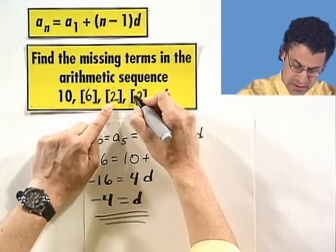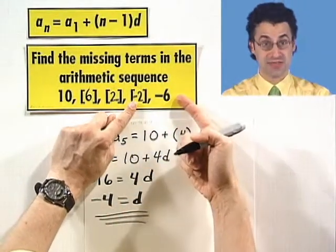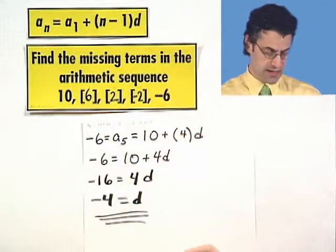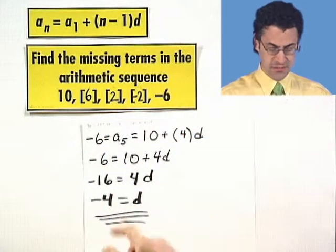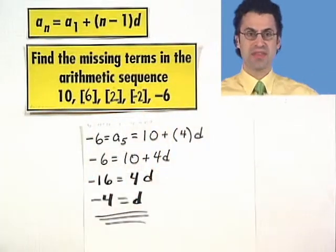And just as a check, let's do one more. If I take negative 2 and add negative 4, notice I get negative 6. So I actually hit the target that we were given. And so we were actually able to find all the terms that are intermediate between the 10 and the negative 6.